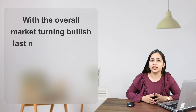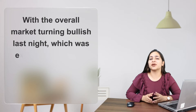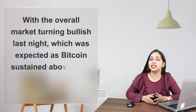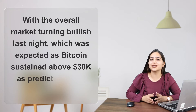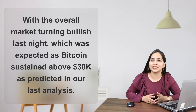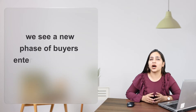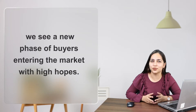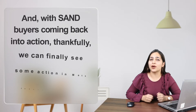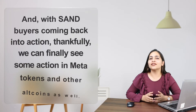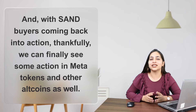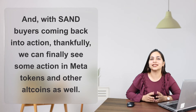With the overall market turning bullish last night, which was expected as Bitcoin sustained above $30,000 as predicted in our last analysis, we see a new phase of buyers entering the market with high hopes. And with Sand buyers coming back into action, we can finally see some action in Meta tokens and other altcoins as well.